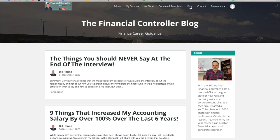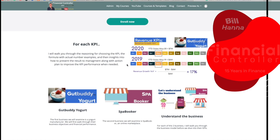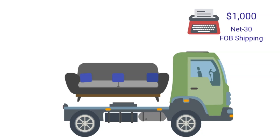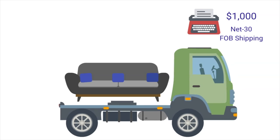Let's start with a quick example. If a company sells a couch and issues an invoice for a thousand dollars, let's assume the terms are net 30 and FOB shipping point. Net 30 refers to how long the customer has to pay, and FOB shipping point refers to when ownership is transferred — in this case, at the point of shipping. This information is key when deciding on revenue recognition.